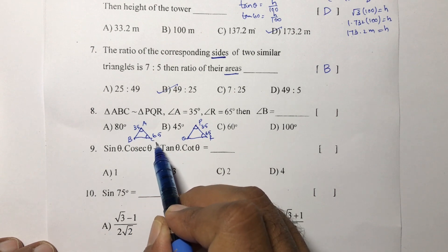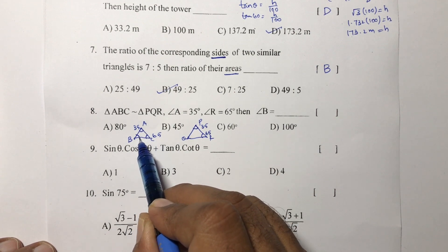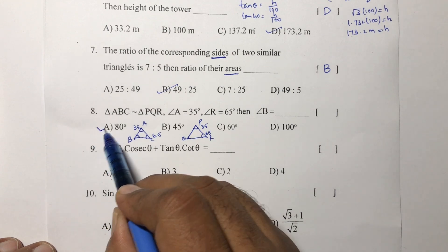They both add up to 100, so angle B will be 80 degrees. Correct option is A.